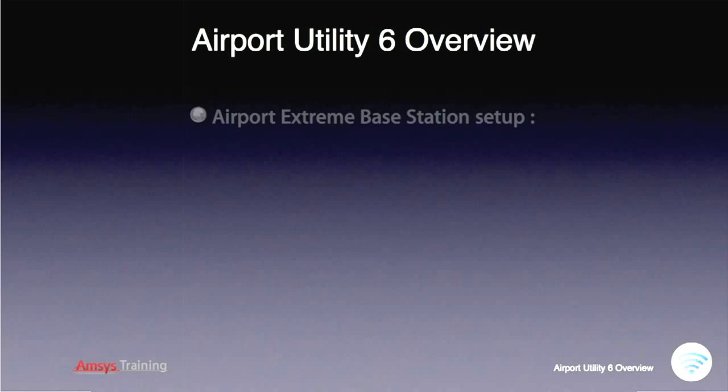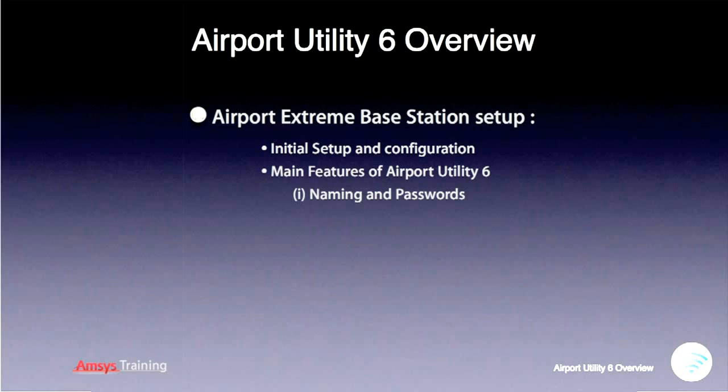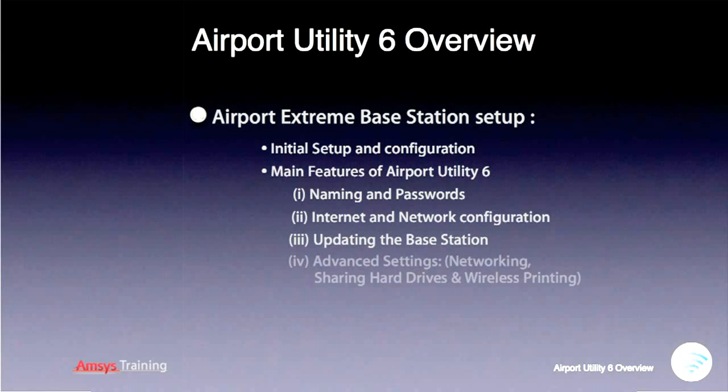You will learn how to set up the base station and configure the network and base station name, and how to add passwords and security to your wireless network. We will then see how to configure the base station to receive network and internet details. Lastly, we will go through some of the additional advanced settings you can configure, such as how to set the base station to provide services, share USB hard drives and printers.